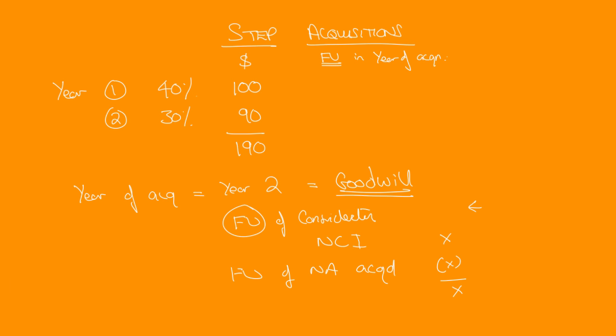So what was the fair value of 30% in year two? Well, it was obviously $90, because that's what was paid. But what was the fair value of 40% in year two? I don't know. I don't know what the fair value of 40% is in year two. I only know what it was in year one.